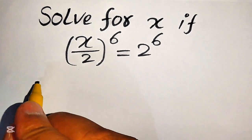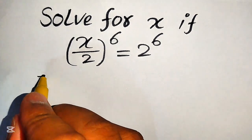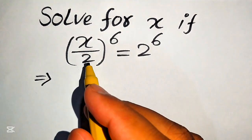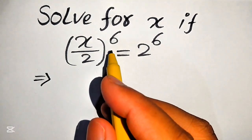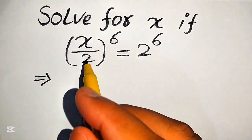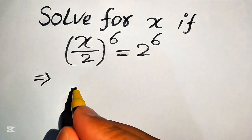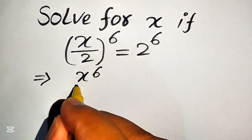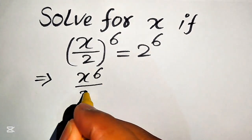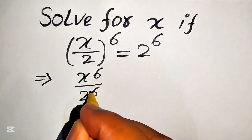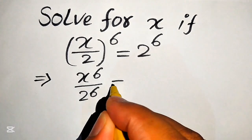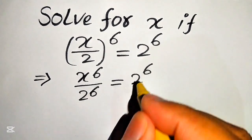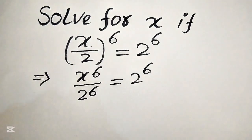First we need to move the terms. We can apply the exponent 6 on both of these values and it will be written as x to the power of 6 divided by 2 to the power of 6, and it is equals to 2 to the power of 6.